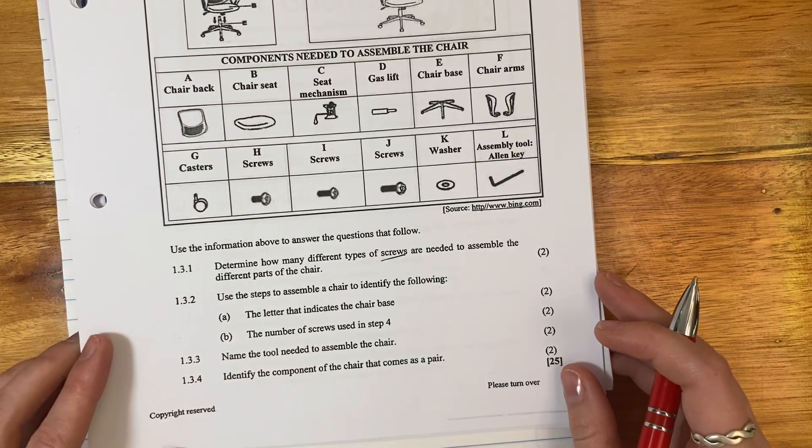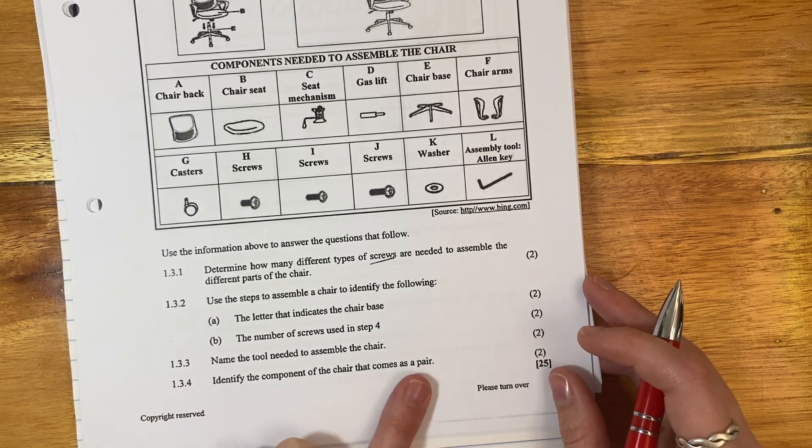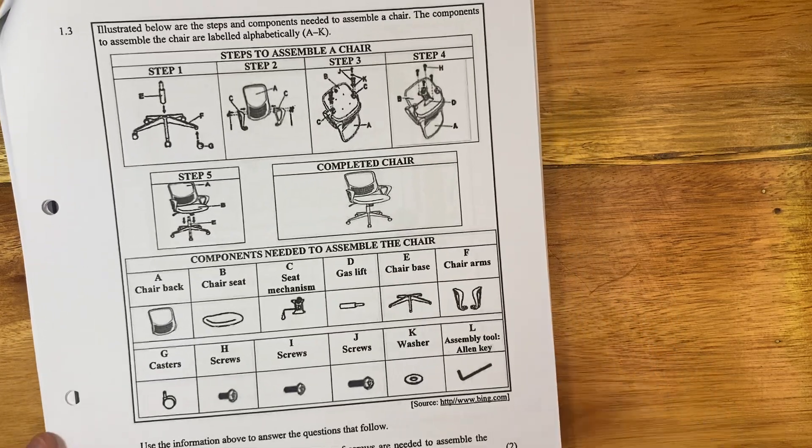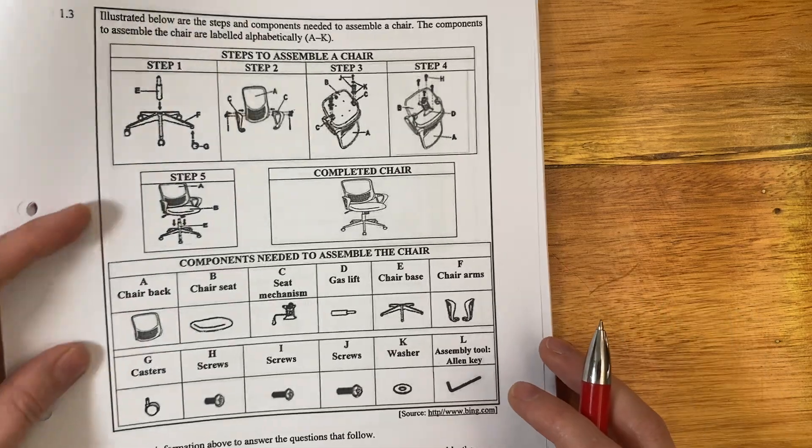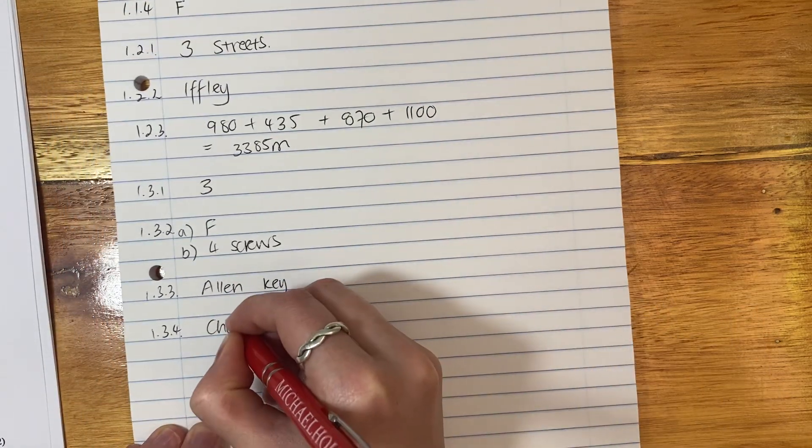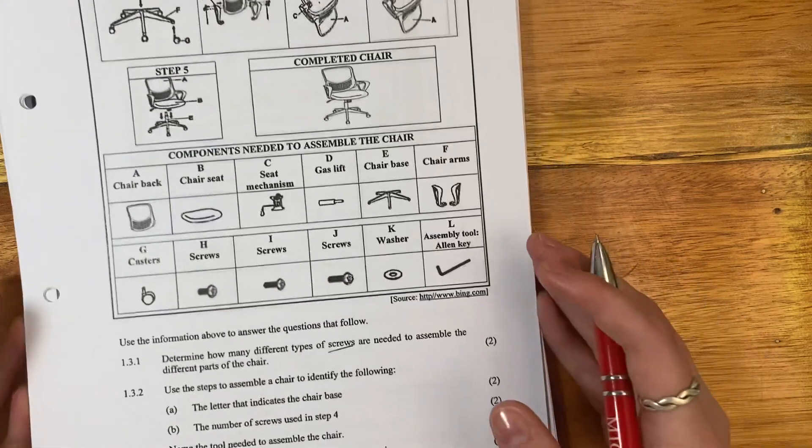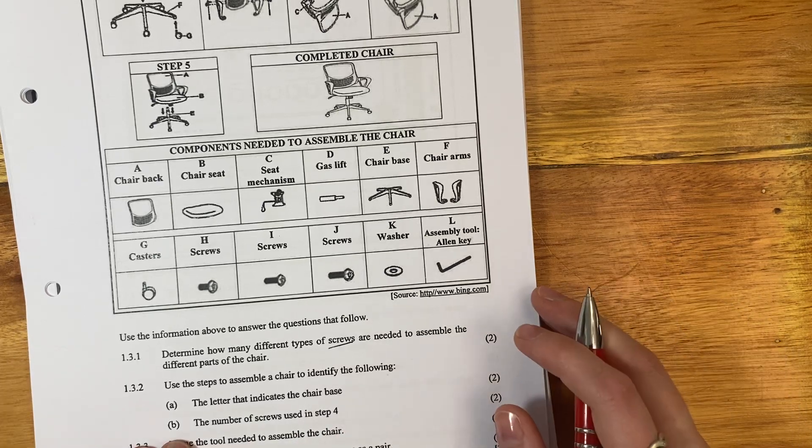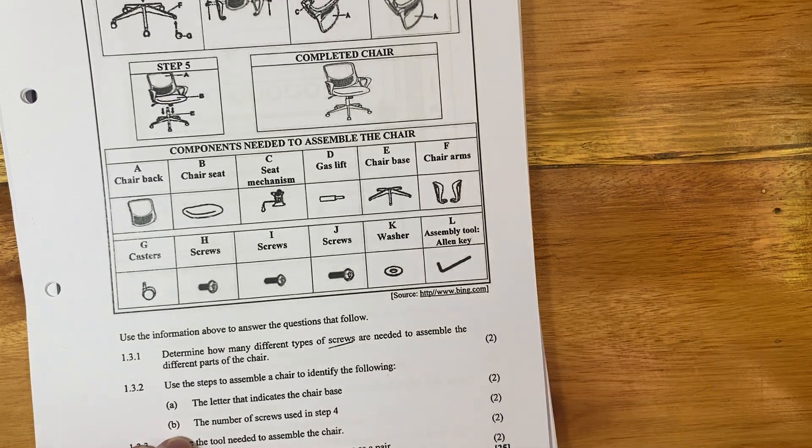1.3.4: Identify the components of the chair that comes as a pair. A pair means basically in two. So the only part that comes in two from what I can see is the chair arms. So we're just going to say here for that question, we're just going to say chair arms. So you see this question could have been a lot more complicated, but because we went to the questions and we allowed the questions to steer our thinking, we actually did really well. Perfect. Let's move on to question two.